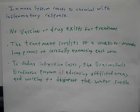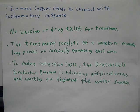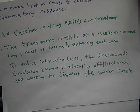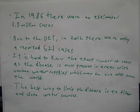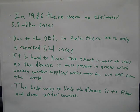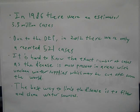To reduce the number of cases, the Dracunculiasis Eradication Program is educating afflicted areas and working to disinfect their water supplies. It is difficult to know the exact number of cases because the disease is only present in areas with an infected water supply, and oftentimes those areas are cut off from the outside world. The best way to limit this disease is to filter the water supplies to make them clean.